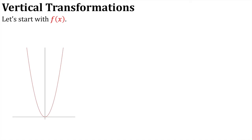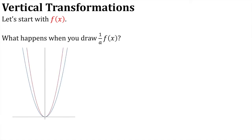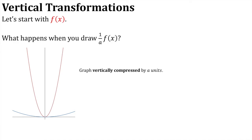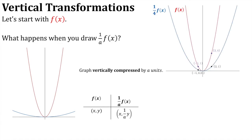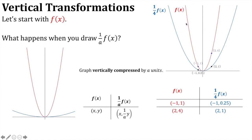Starting with f of x again — what happens when we draw (1/a)·f(x)? The graph almost appears to be going outwards. What's happening is the graph is being vertically compressed by a units — the y-coordinate is being multiplied by 1/a, or equivalently divided by a. For example, with f of x in red and (1/4)·f(x) in blue: the points (−1, 1) and (2, 4) both have their y-ordinates divided by 4, giving (−1, 1/4) and (2, 1).